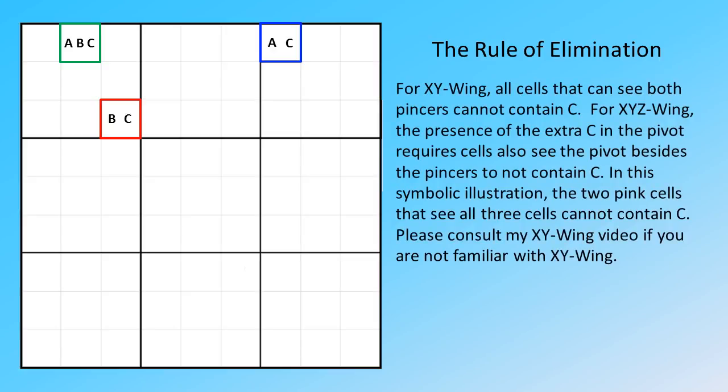For XY Wing, all cells that can see both pincers cannot contain C. For XYZ Wing, the presence of the extra C in the pivot requires cells also see the pivot besides the pincers to not contain C.